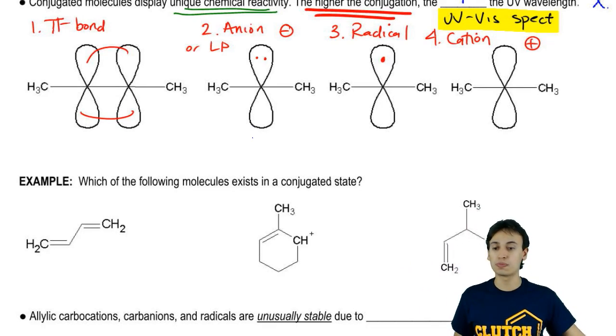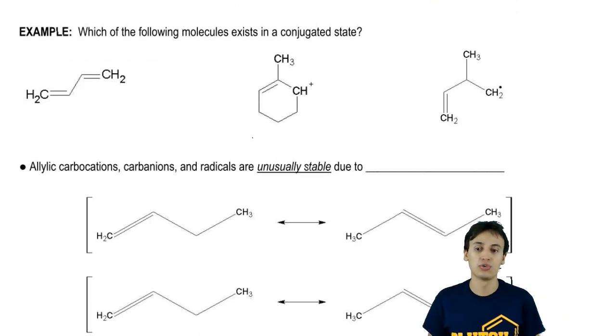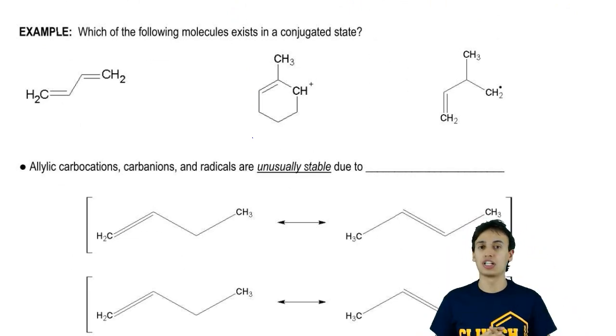What we're going to do is we're going to do this practice problem. You have to identify which of the following molecules exist in a conjugated state. Go ahead and use what I talked about earlier above as a reference and figure out which of these molecules are conjugated and which ones are not conjugated. So go ahead and do that now. Here we go.